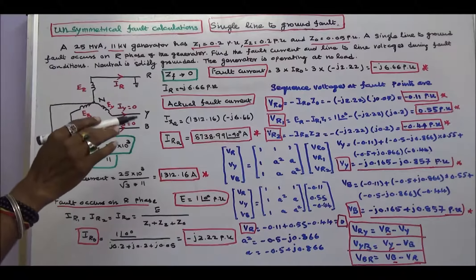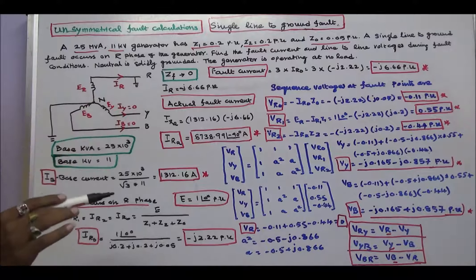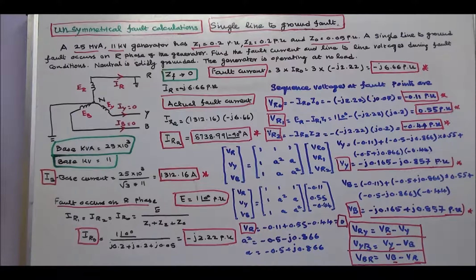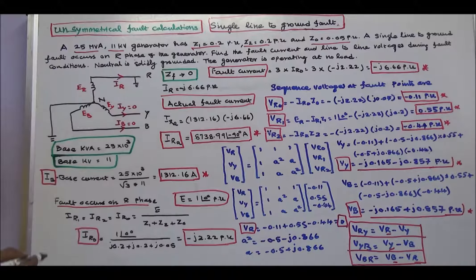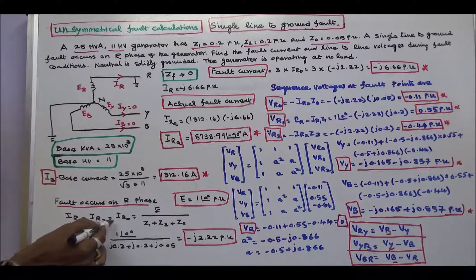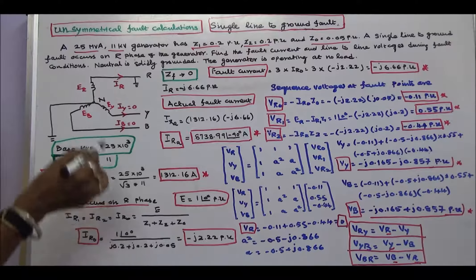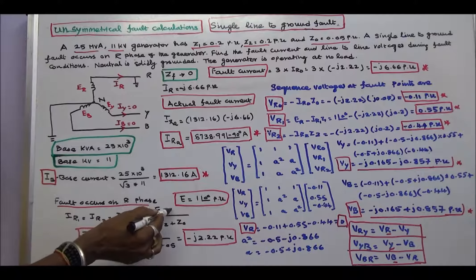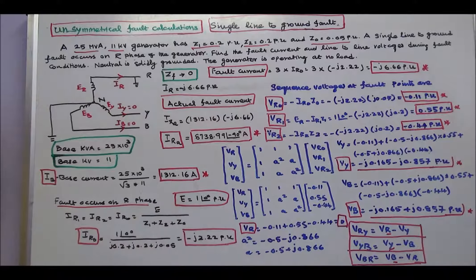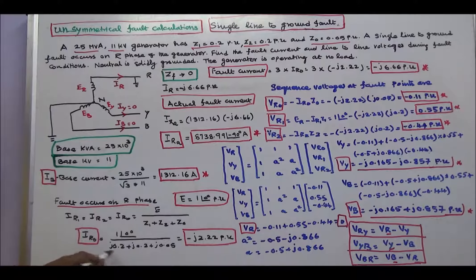The generated EMF system has only positive sequence voltage. Since a fault occurs on phase R, the positive sequence current, negative sequence current, and zero sequence current are all equal to E divided by Z1 plus Z2 plus Z0. Here E equals 1 angle 0 degrees per unit. Therefore the zero sequence current I_a0 equals minus j 2.22 per unit.